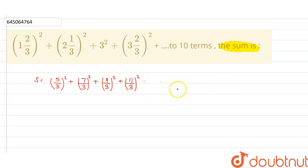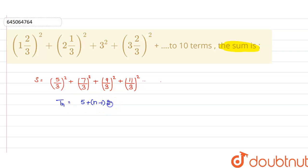So if I want to find the Tₙ term — as we can see, in the numerator 5, 7, 9, 11 are forming an AP series with a common difference of 2. So we can write Tₙ as: numerator = 5 + (n−1) × 2, and the denominator is 3 squared. This simplifies to (3 + 2n) whole squared in the numerator.